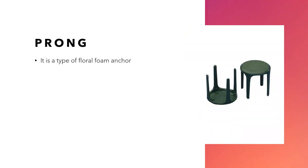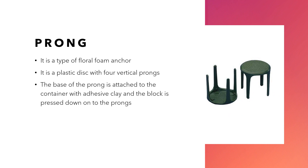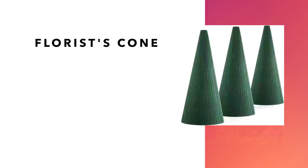The next one is a prong. It is a type of floral foam anchor — a plastic disc with four vertical prongs. The base of the prong is attached to the container with an adhesive clay and the block is pressed down onto the prongs. We are going to learn about the adhesive clay in our next upcoming slides.